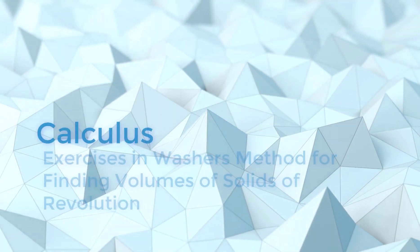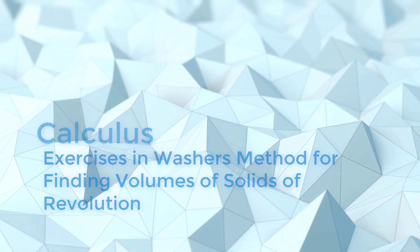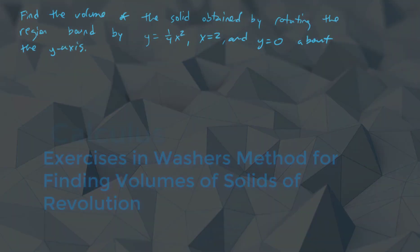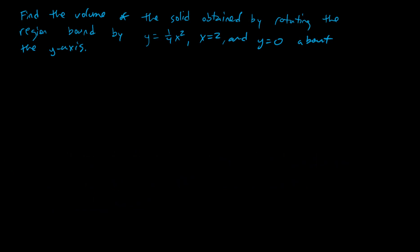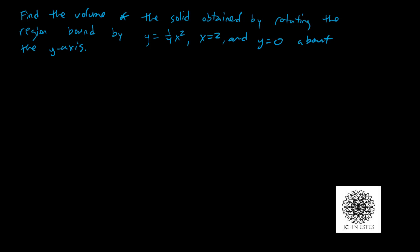We're going to look at this example where we have to find the volume of the solid obtained by rotating the region bounded by the curve y equals 1/4 x squared, x equals 2, and y equals 0 about the y-axis. I'm going to show how to solve this in two different ways.